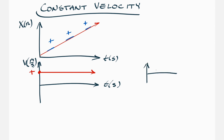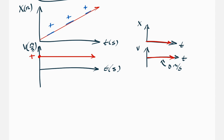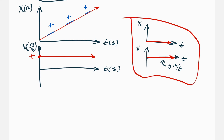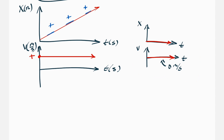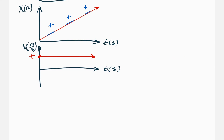Going back to the case where velocity is zero meters per second: the slope of the x versus t graph would not be a diagonal line — it would itself be a flat line on the time axis. Any other case, like a negative flat line on v versus t, would just correspond to a downward-pointing diagonal line on the x versus t graph.